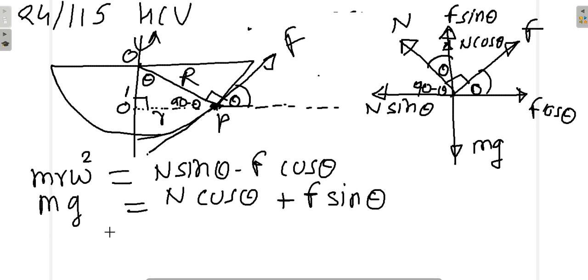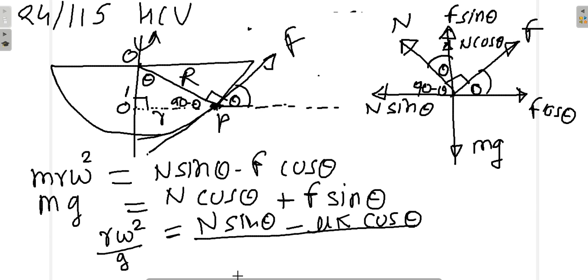I'll get r omega square upon g equal to N sin theta minus mu N cos theta divided by N cos theta plus mu N sin theta. If I take N common from numerator and denominator, it will simply cancel. So what do I have?